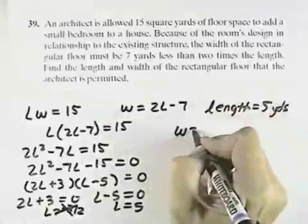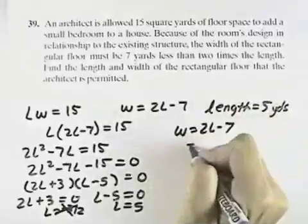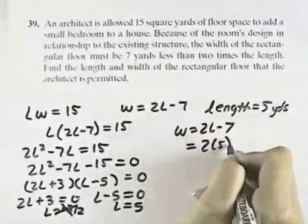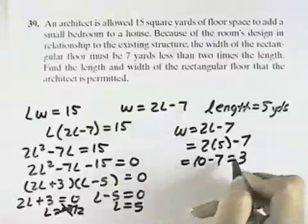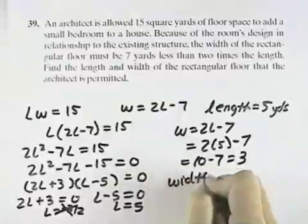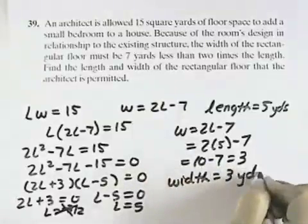But then our width equals 2L minus 7, which is 2 times 5 minus 7. 10 minus 7 is 3, so our width equals 3 yards.